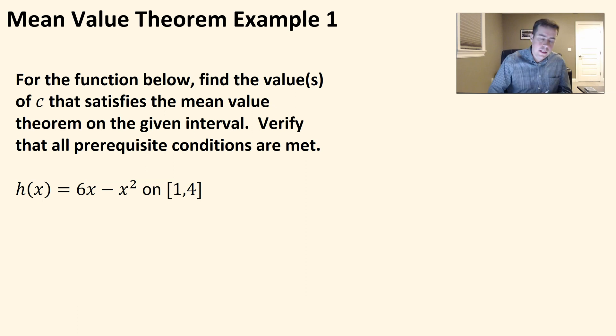So let's do what we have to do next. h'(c) is going to equal f(b) - f(a) over b - a. So somewhere there's some c value where if you put it into the derivative, it's going to equal the slope. Let's figure out what the slope would be.